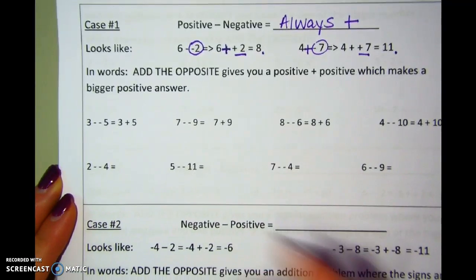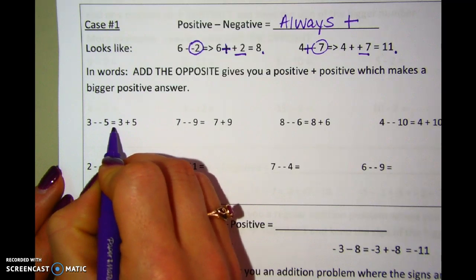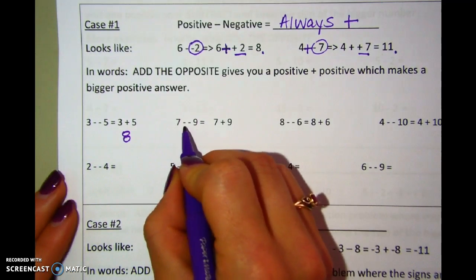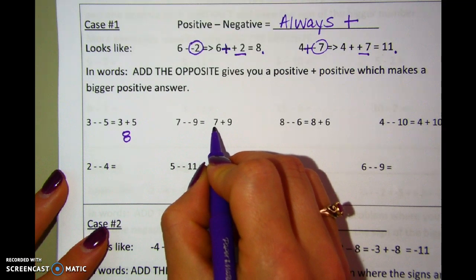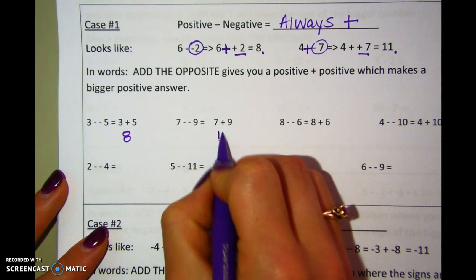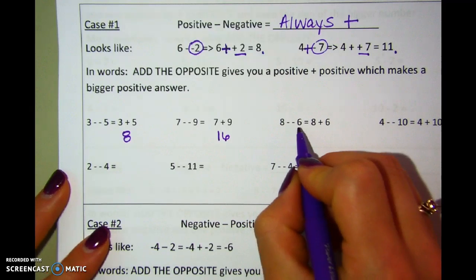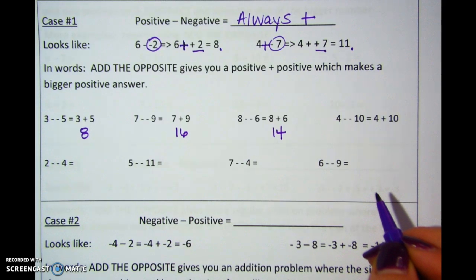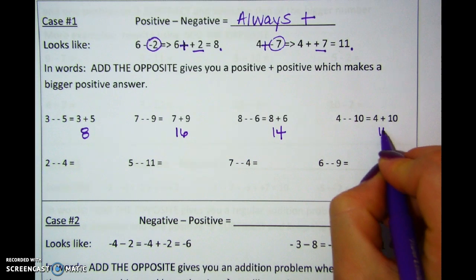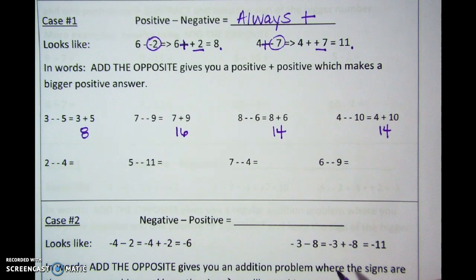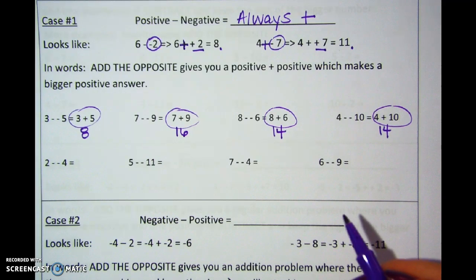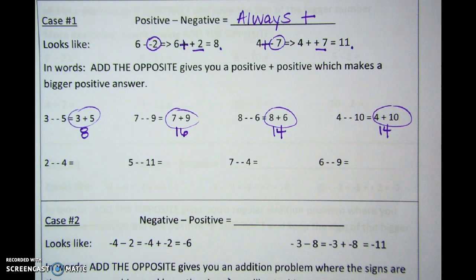Here are some examples. Three minus negative five is just three plus five, which would be eight. Or seven minus negative nine — seven plus nine — and that is 16. Eight minus negative six is eight plus six. And four minus negative ten is four plus ten, which is 14. Pause it here — I want you to rewrite it first, change it to add the opposite, and then find the answer.